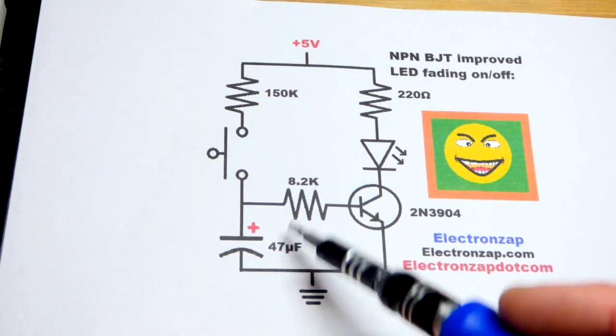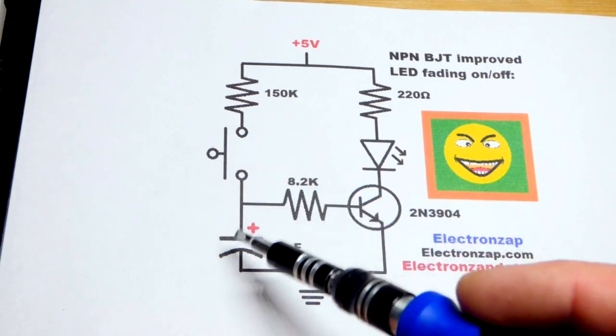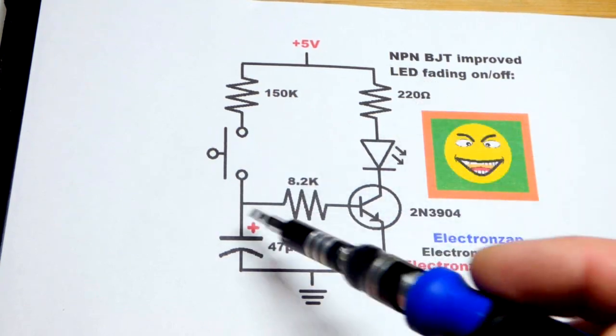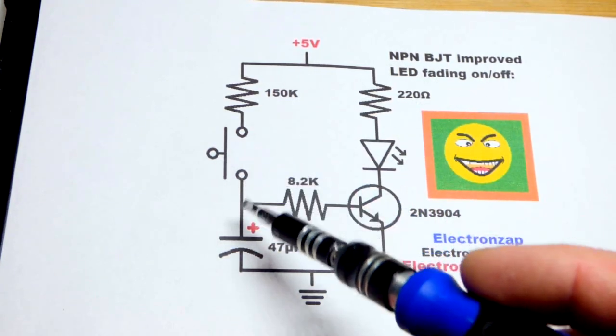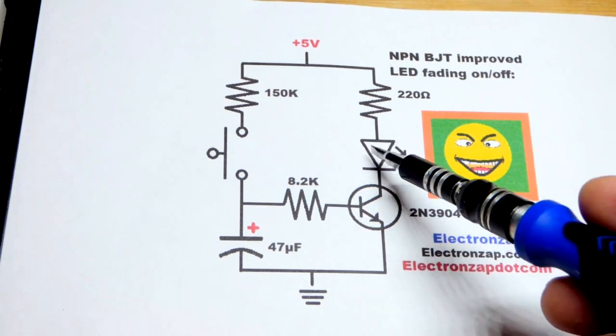In the last video we used a capacitor directly to get an LED to fade on. When we closed the switch it took time for it to get to its full brightness, and then when we released the switch it took time to get completely off. We're going to have that again, so basically it fades on and then fades off, but we're going to improve it with an NPN bipolar junction transistor.